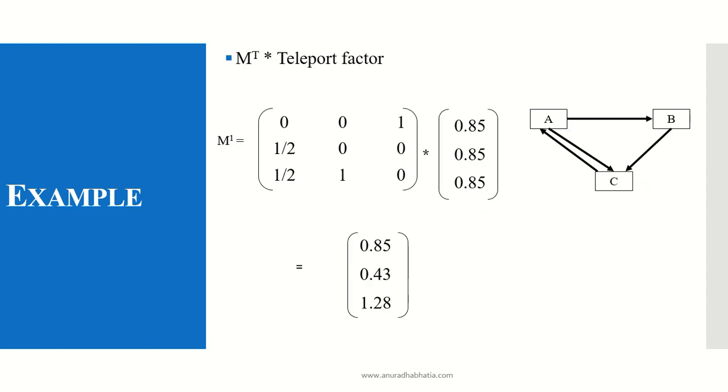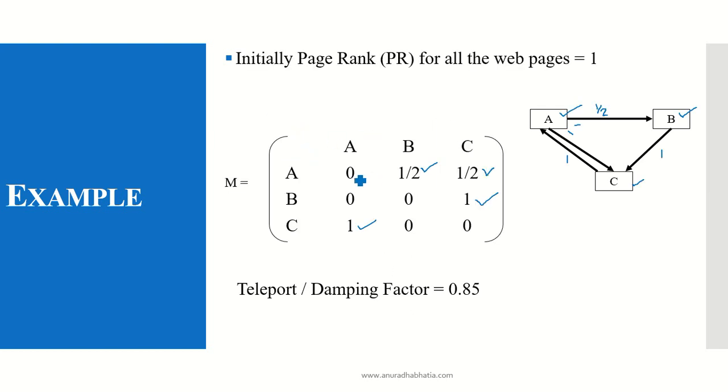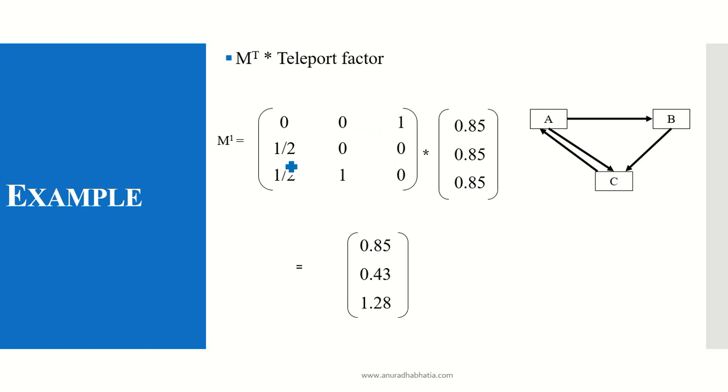Let's see how we calculate. First thing that we need to do is we need to find the transpose or the transition for the matrix M. So we have converted the rows to columns and columns to rows. So the matrix which looks like 0, half, half, 0, 0, 1 and 1, 0, 0, now becomes 0, 0, 1, half, 0, 0 and half, 1, 0.